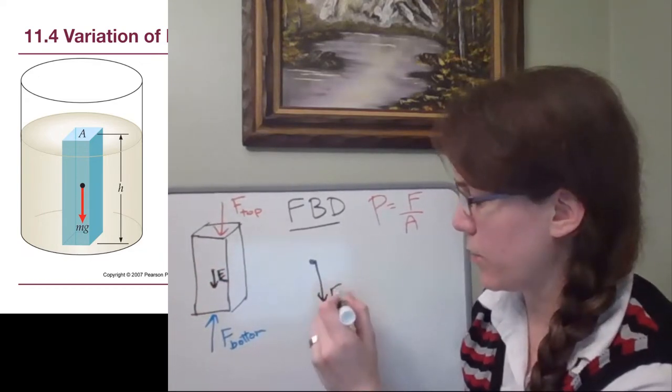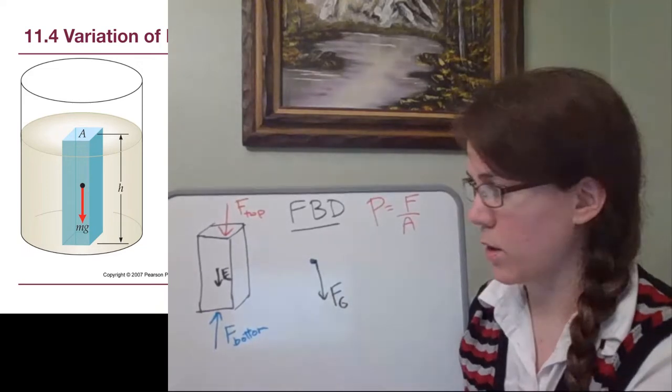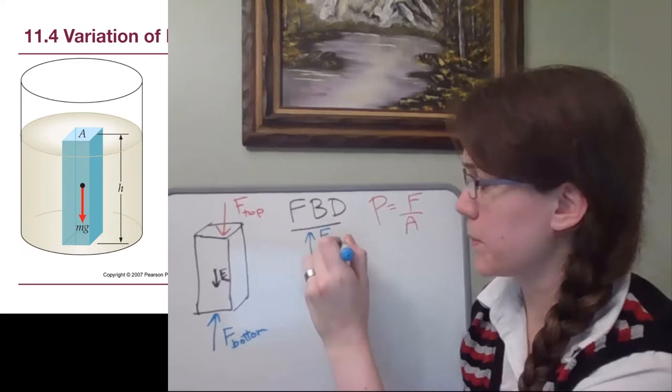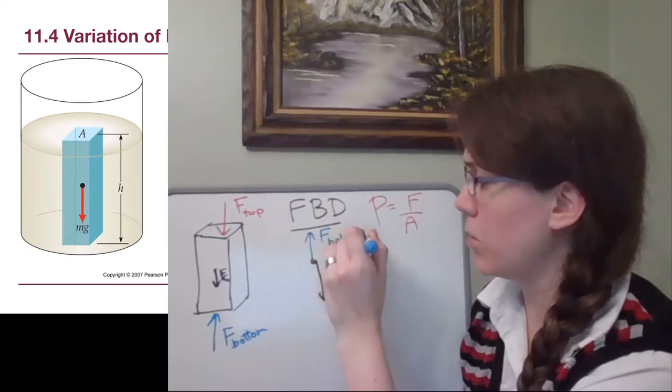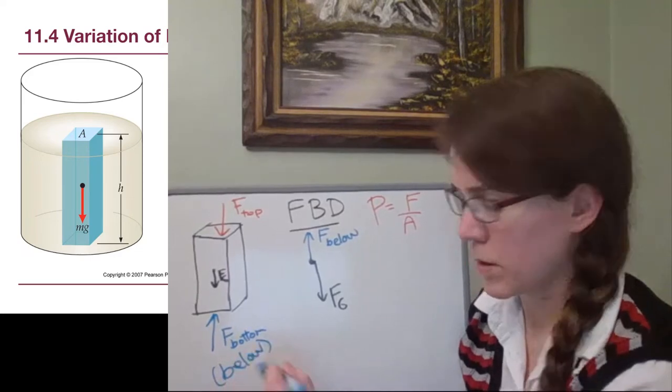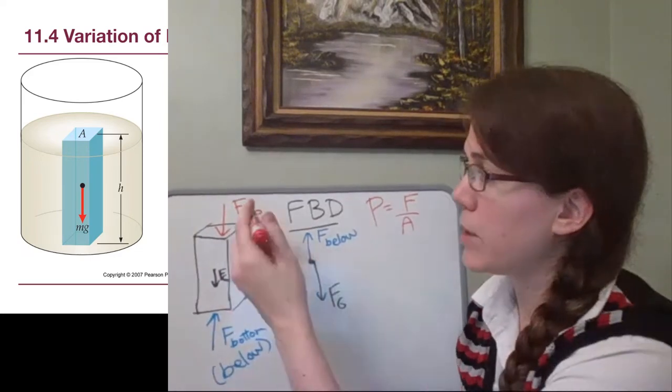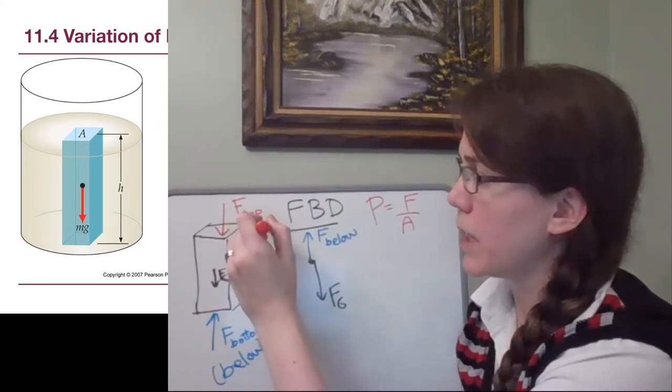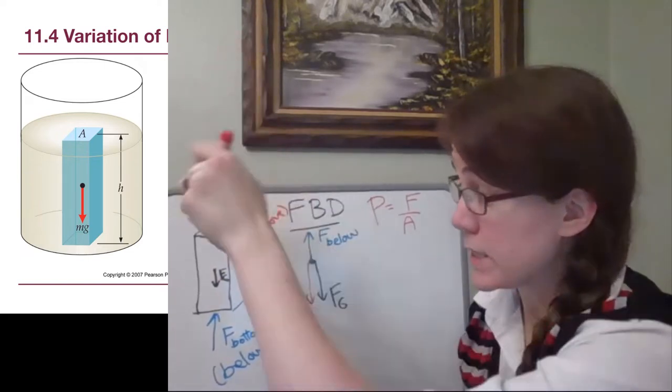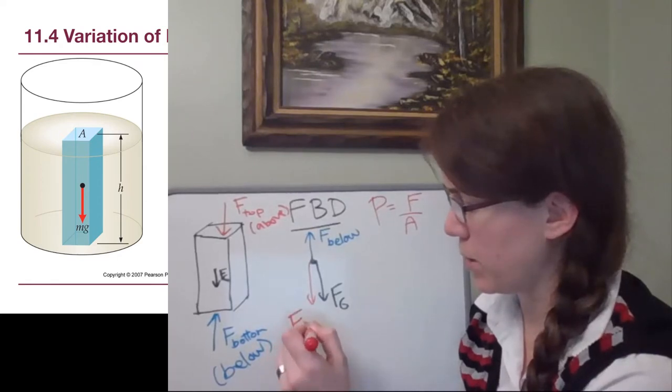We have the pressure of the air pushing down on that top. So I'm going to call it the force at the top, but we know that that force is coming from pressure, and I'll write it over here, that pressure is force over area. We also have the force at the bottom pushing up on this column of water, and right in the middle at the center of gravity we have gravity itself.